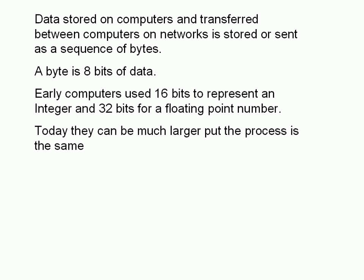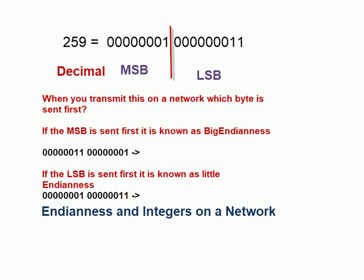A quick recap: data stored on computers and transferred across networks is stored as a sequence of bytes, and a byte is 8 bits. Early computers used 16 bits to represent an integer and 32 bits for a floating point number. Today 64 bits is common, but the process is the same. Here is a 16-bit number representing decimal 259 — the most significant bit represents 256 and the least significant represents 3, so 256 plus 3 equals 259.